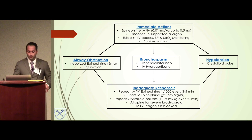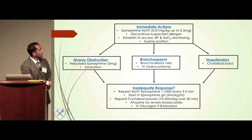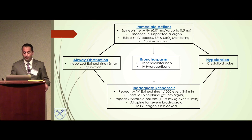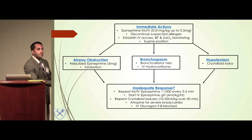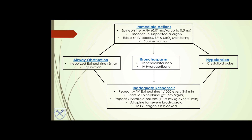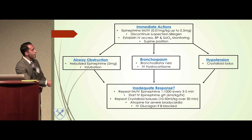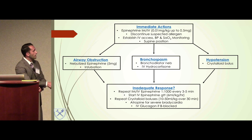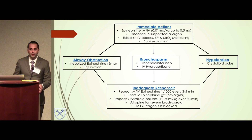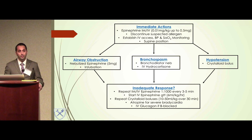Always discontinue the drug if you think it's causing an allergy. Establish IV access, place the patient supine to elevate blood pressure. If airway obstruction develops, give nebulized epinephrine or intubate. For bronchospasm, give bronchodilators. For hypotension, a crystalloid bolus is first line. If not responding, continue epinephrine every 3-5 minutes — remember the dose: for anaphylaxis it's 1:1,000, not 1:10,000 as in cardiac resuscitation. If the patient remains hypotensive, start an epinephrine drip. Repeated crystalloid boluses can be given. If bradycardic, atropine can be given; if due to a beta blocker, glucagon can be used to reverse it.